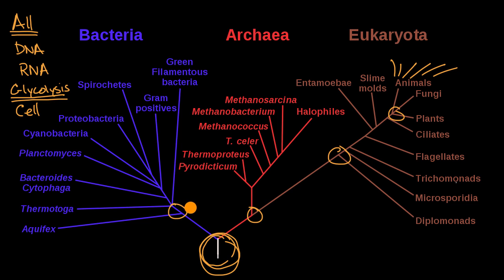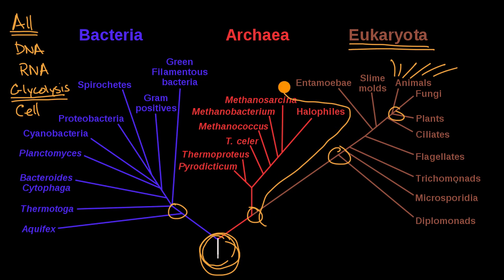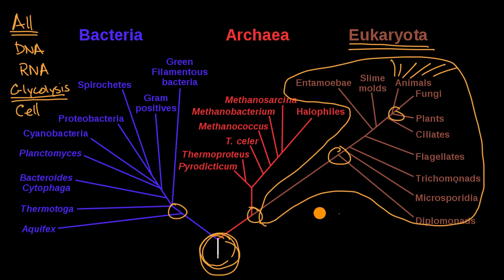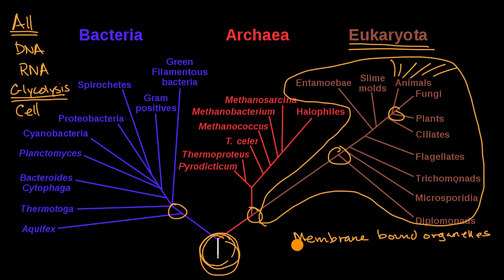And that goes to more structural evidence. For example, amongst what we now classify as eukaryotes — so everything in this brown color, this branch of the tree right over here — we see that all of them have membrane-bound organelles. These are things like a nucleus or mitochondria that we study in many other videos.